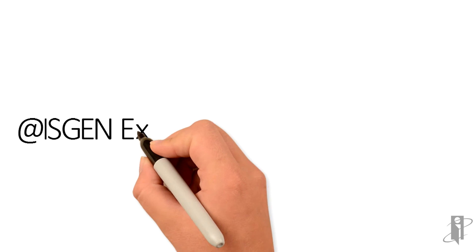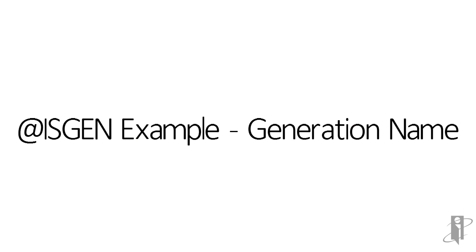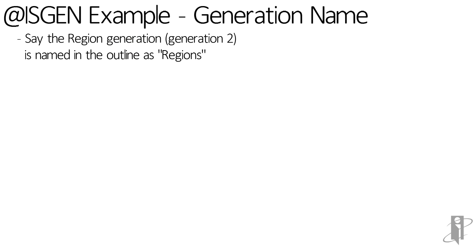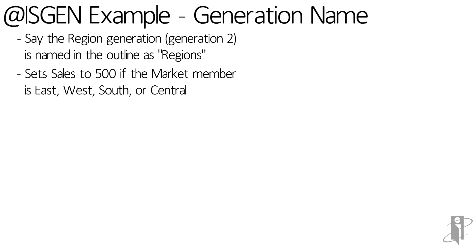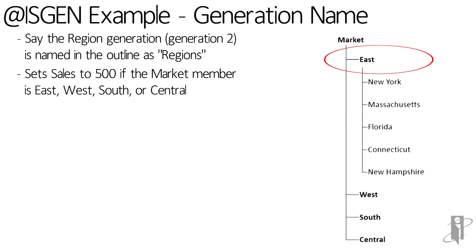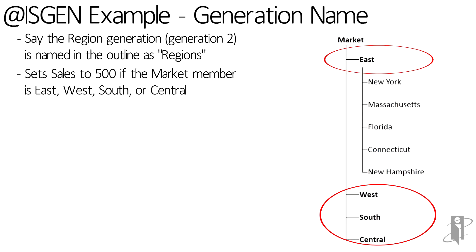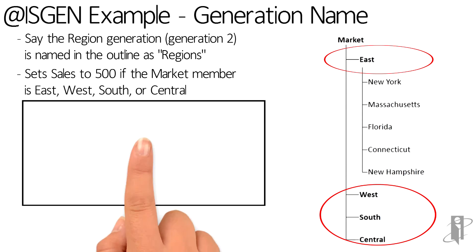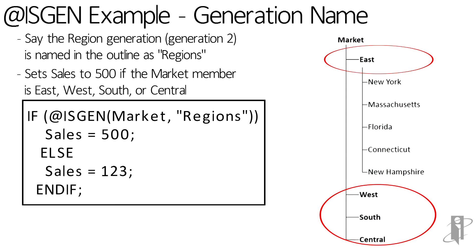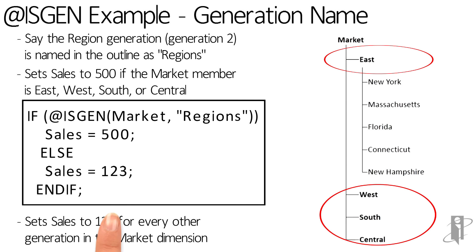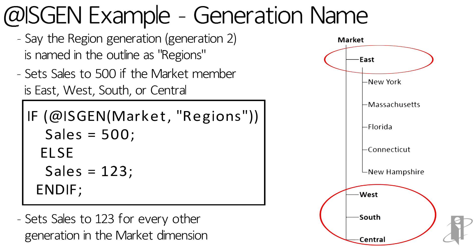Let's take a look at isGen functions using generationName. In our outline, generation 2 is named as Regions. Regions consist of East, West, South, or Central. In this example we will look in the market dimension under Regions, and if it's one of those four the value for sales will be 500. If the member comes from a different generation then the value for sales will be 123.